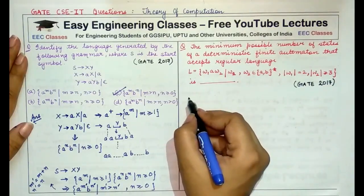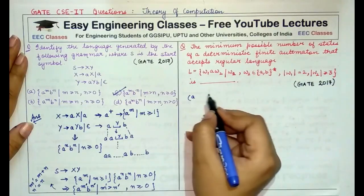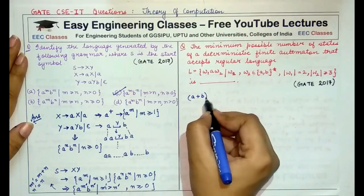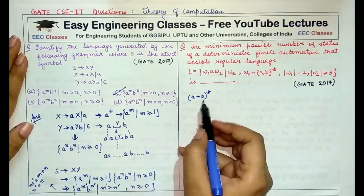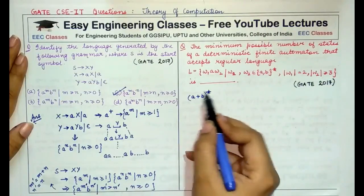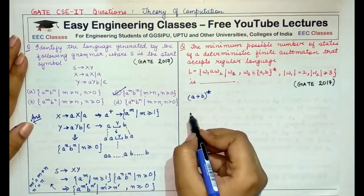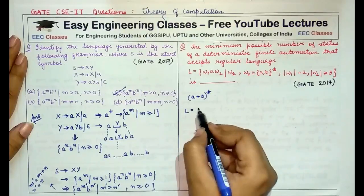We can say that both W1 and W2 are formed by this string or by this set A or B occurring any number of times. So, simplifying the language, we can write down the language as, since it is saying exactly two occurrences of W1.